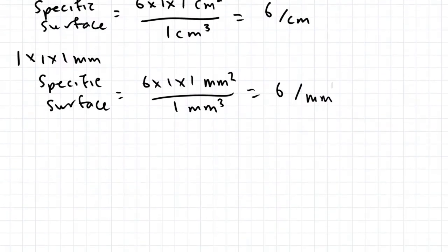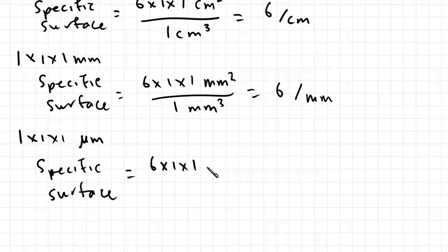Let's do one last example. For a 1 by 1 by 1 micrometer cube, the specific surface works out to be 6 by 1 by 1 square micrometers divided by 1 cubic micrometer. That equals 6 per micrometer.